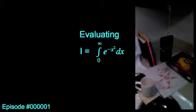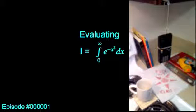There is of course no anti-derivative for e to the negative x squared, but it is possible to evaluate the integral using a few tricks, including a change in coordinates.